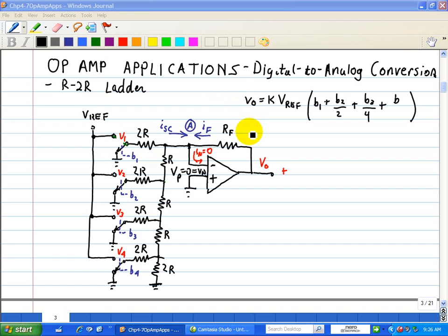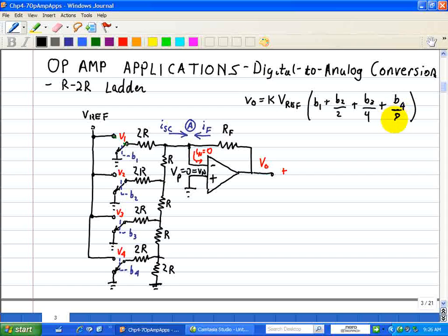Now, the output from this configuration, this DAC, is again governed by K times the V reference, as well as the bits B1, B2, B3, and B4 all over 8, which is the same output that we get from our binary-weighted summer.